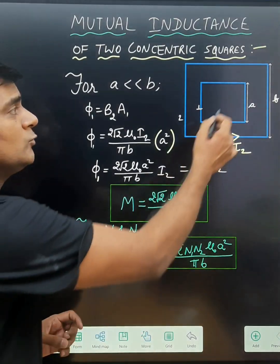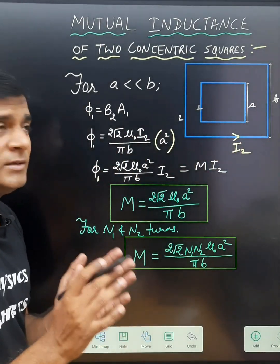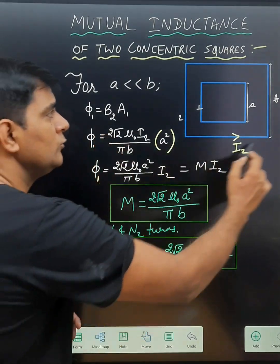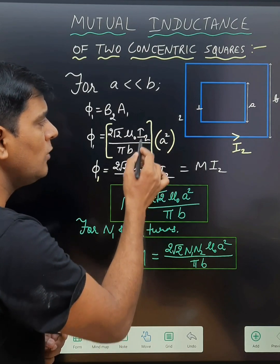We can write the flux associated with the first coil equals B2 times A1. The magnetic field B2, which is due to current I2, is given by 2√2 μ0 I2 upon π B.